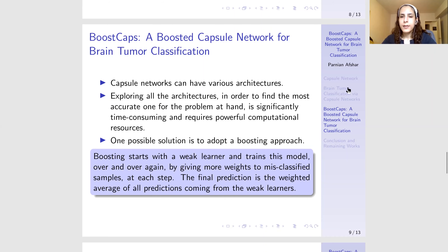One possible solution to overcome this problem is to use a boosting approach. Basically, boosting means that we start with a weak learner — that is, a basic capsule network in our problem. We train this model over and over again, but each time we give more weight to misclassified samples. The final prediction is the weighted average over all predictions coming from all the weak learners, based on how successful they have been in predicting the true class.